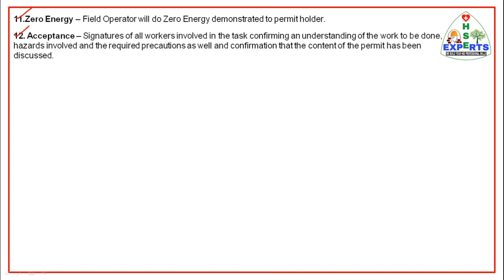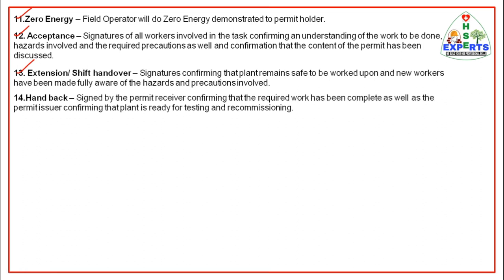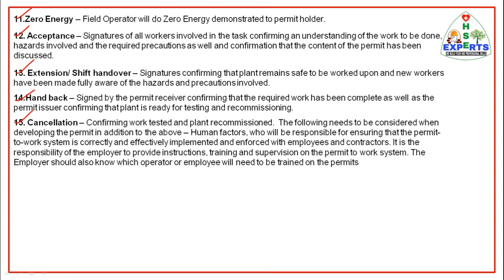Acceptance — signatures of all workers involved in the task confirming understanding of the work to be done, hazards involved, required precautions, and confirmation that the content of the permit has been discussed. Extension or shift handover — signatures confirming that the plant remains safe to be worked on and new workers have been made fully aware of the hazards and precautions involved. Hand back — signed by the permit receiver confirming that the required work has been completed, and by the permit issuer confirming that the plant is ready for testing and commissioning. Last section is cancellation — confirming work, test, and plant recommissioned.